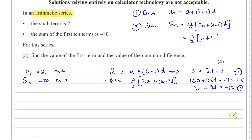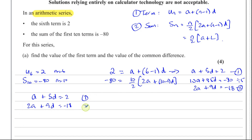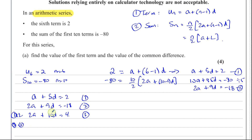So we have two equations: equation 1 is a plus 5d equals 2, and equation 2 is 2a plus 9d equals negative 18. If I take equation 1 and multiply it by 2, I get equation 3: 2a plus 10d equals 4. Then equation 3 minus equation 2 eliminates the a terms, giving d equals 4 minus negative 18, which is 22.